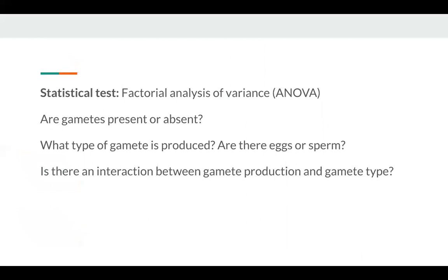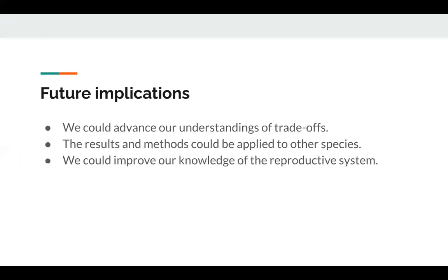This test assesses whether what you've changed had a statistically significant effect on what you measured. The response variables will be whether gametes are present or absent and what type of gametes are produced. The analysis of variance will test for an interaction between these response variables. This will tell me whether the effect of body size varies depending on whether gamete production is switched on or off.